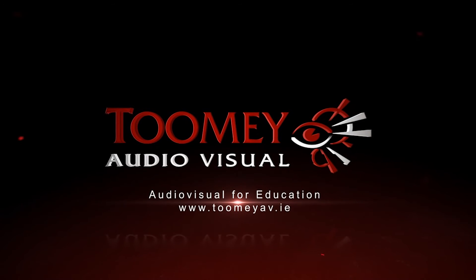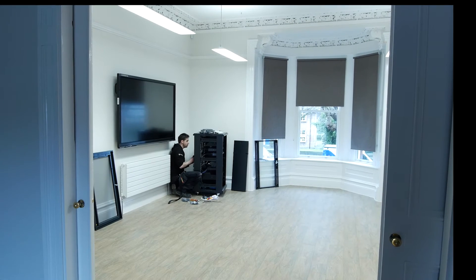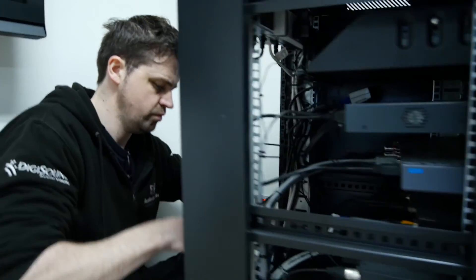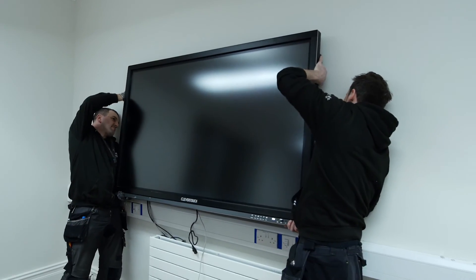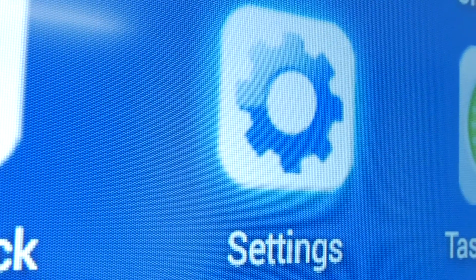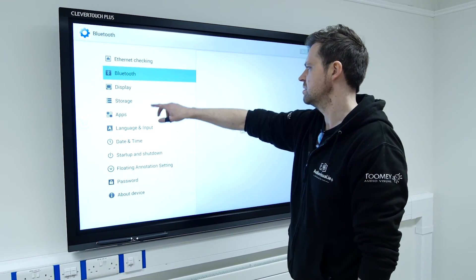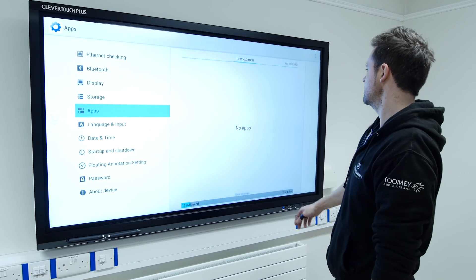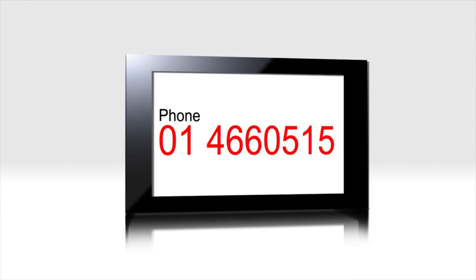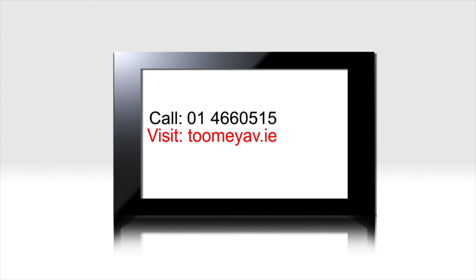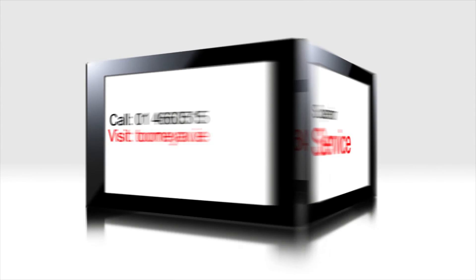Toomey Audiovisual has been supplying Irish schools with audio-visual equipment for fifty years. In that time, we've built an unparalleled reputation for quality, service, and backup support. When considering investing in AV and ICT equipment for your school, it's worth considering the proven track record of your supplier. Call us on 01466 0515 or visit www.toomeyav.ie for a superior level of service.